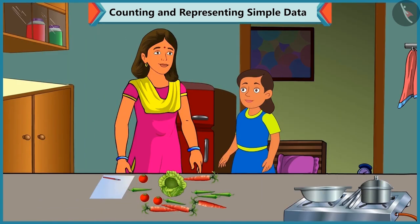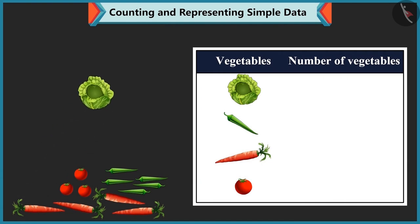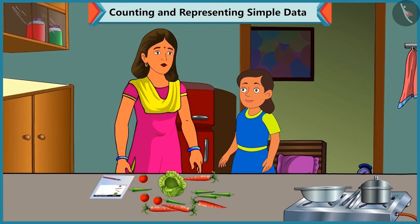Mummy, can I help you in grouping the vegetables? Yes, Bubbly. See, number of cabbages is 1 over here. So we write 1 in front of cabbage. In the same way, we have to count the remaining vegetables and write the number against it. Yes, Mummy.